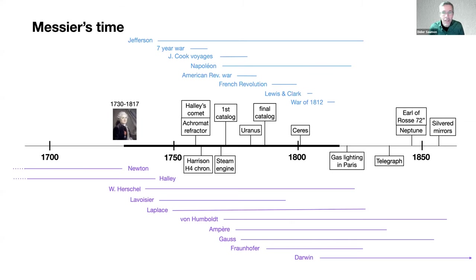Let's start with a timeline of Messier's life to see in what historical context he lived and worked. He lived in the 18th century from 1730 to 1817. He was a contemporary of Thomas Jefferson — they almost have the same birth and death dates. He also lived at a time of exploration. The three voyages by James Cook in the Pacific and around the world took place during the middle of Messier's life, and also the Lewis and Clark expedition to the Pacific towards the end of his life.